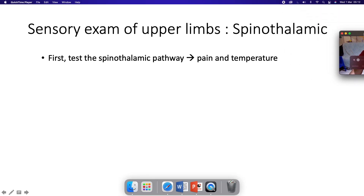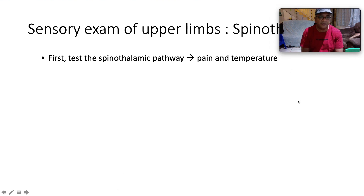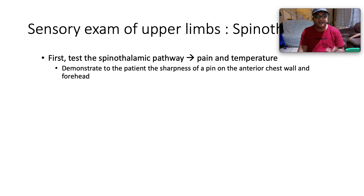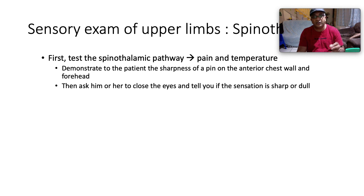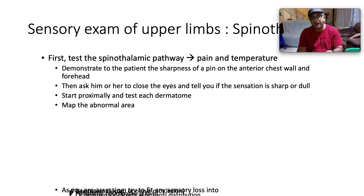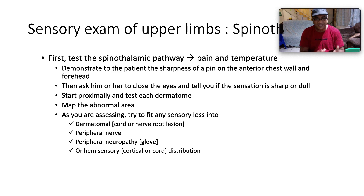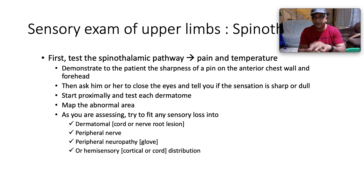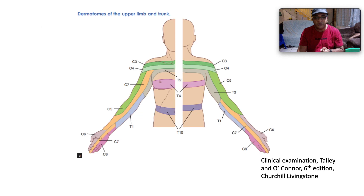For the sensory exam of the upper limb, first test the spinothalamic pathway, which subserves pain and temperature. Demonstrate sharpness of a pin on the anterior chest wall, then ask the patient to close their eyes and test sensation on the limb — asking if it feels sharp or dull. Test each dermatome and map out any abnormal area, attempting to fit sensory loss into one of four patterns: dermatomal (cord or nerve root lesion), peripheral nerve, peripheral neuropathy in a glove distribution, or hemisensory (cortical or cord).